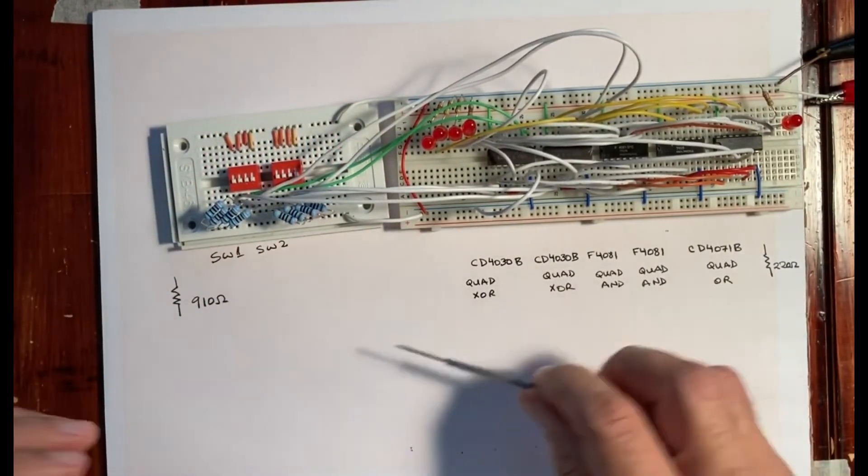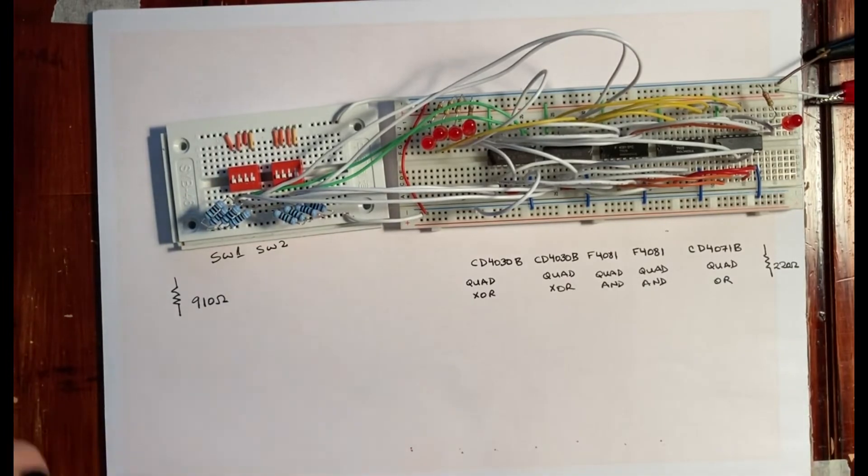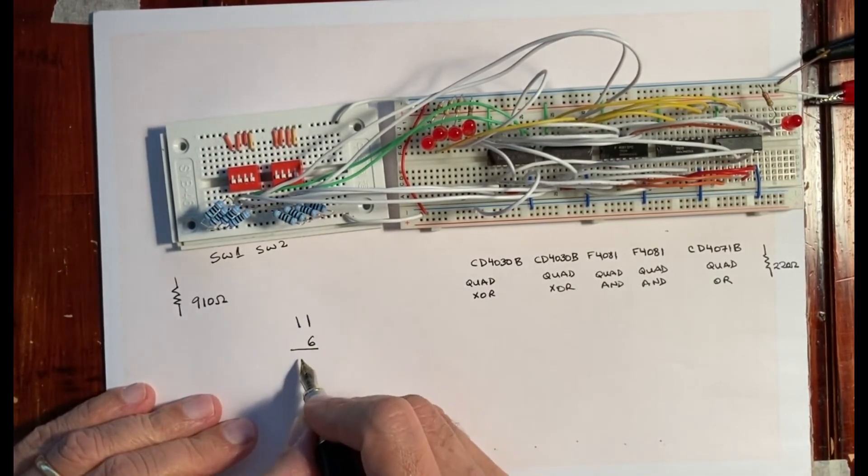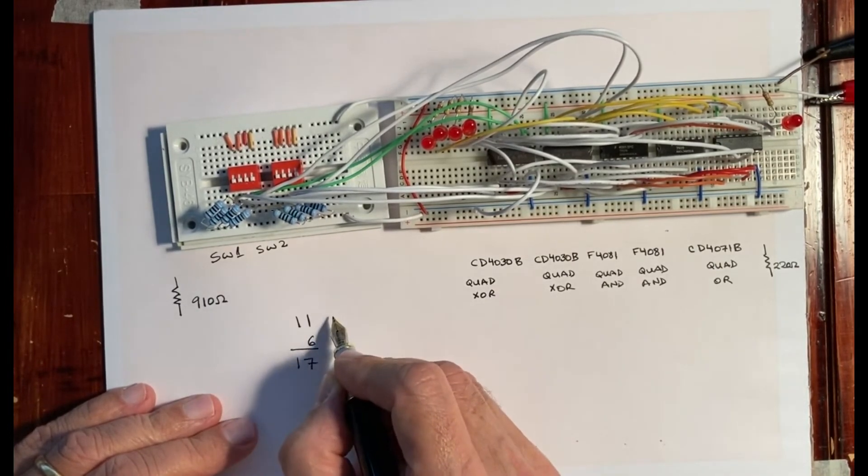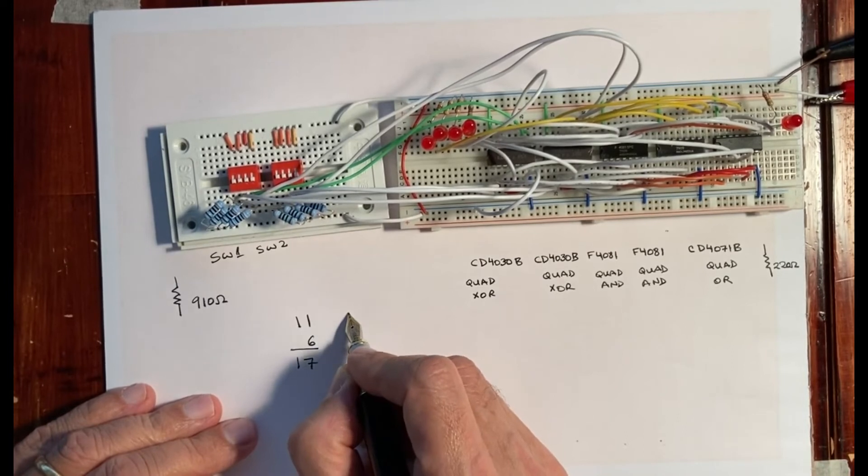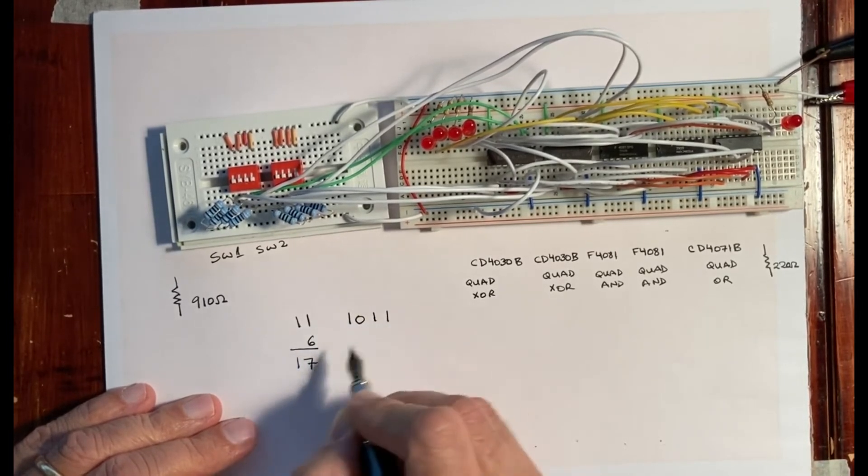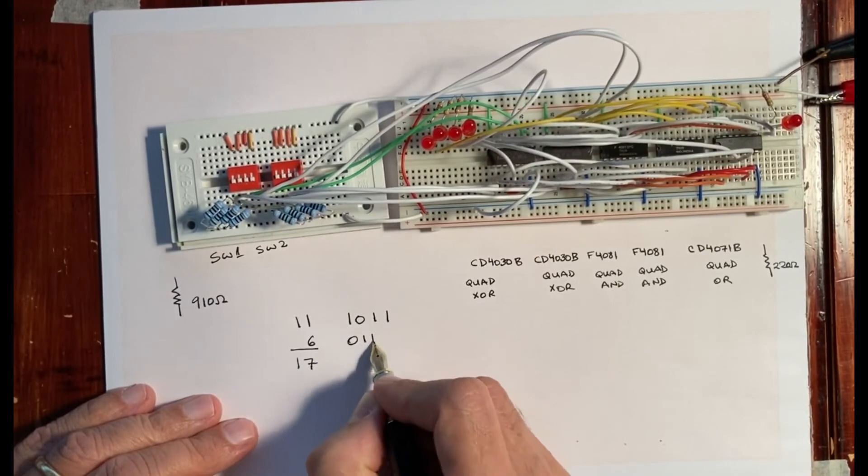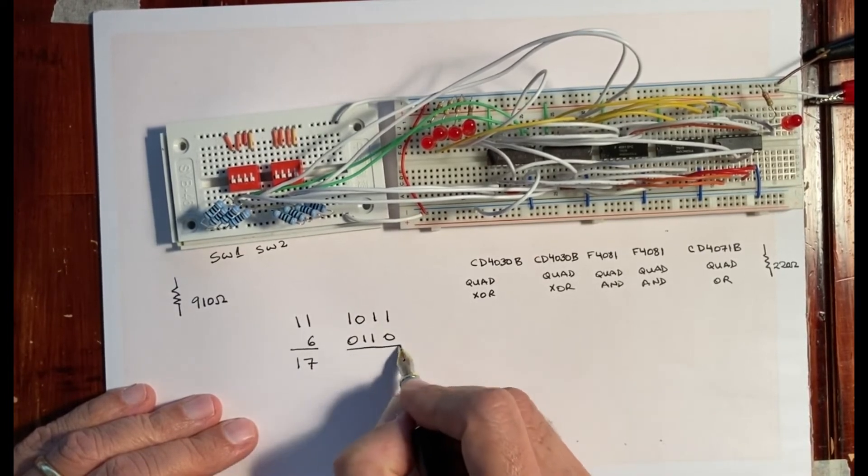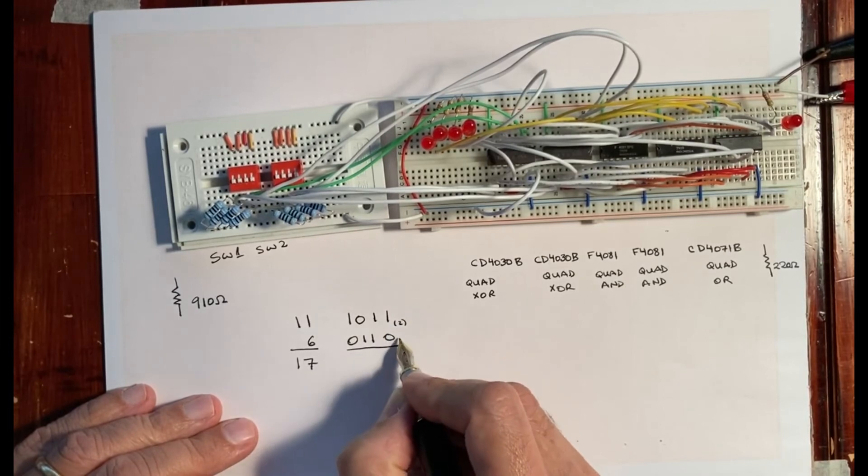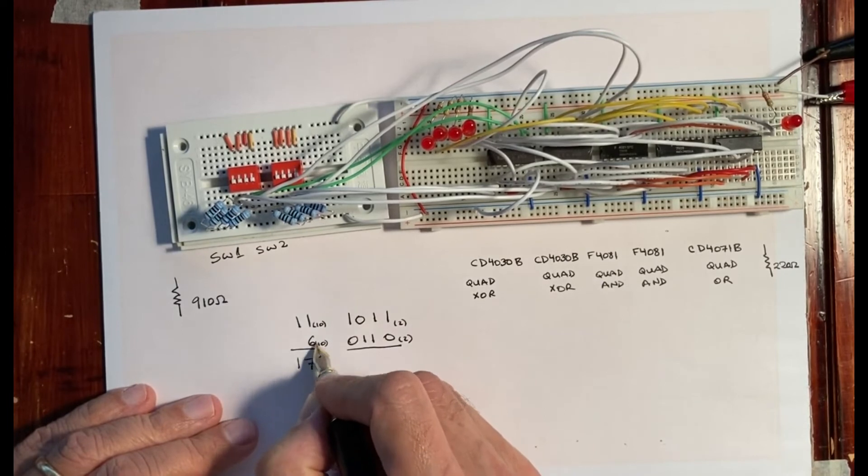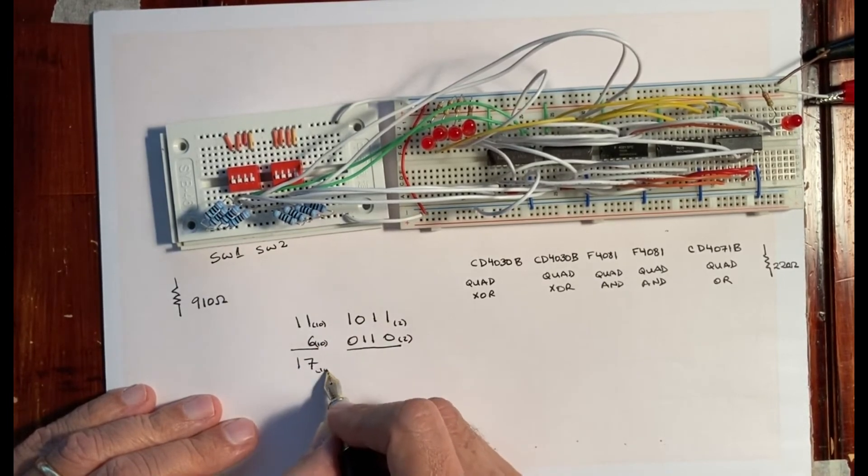Let's go ahead and do 11 plus 6. So if we do 11 plus 6, we're going to get 17. But 11 is this in binary. And 6 is the following.